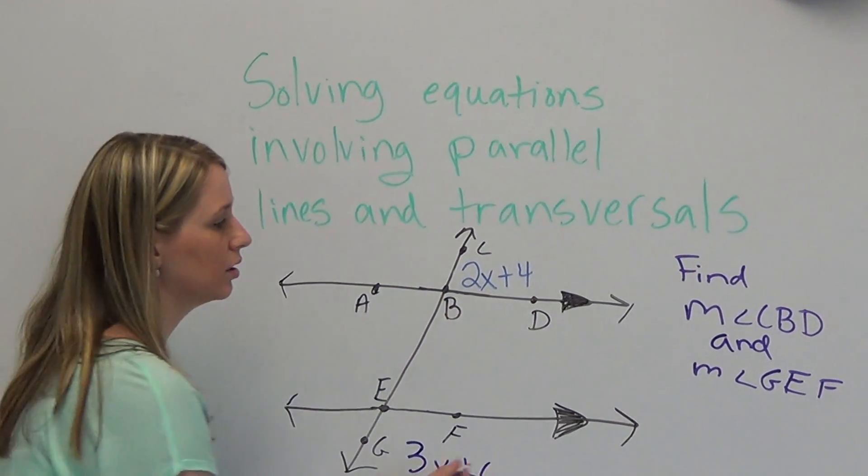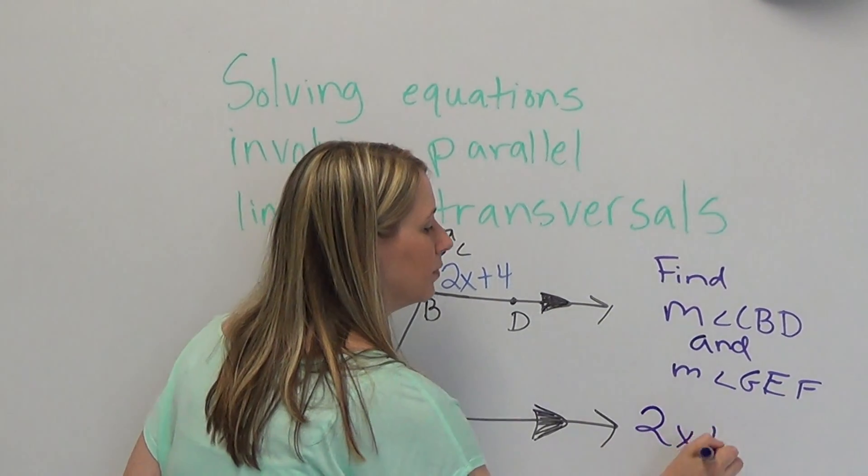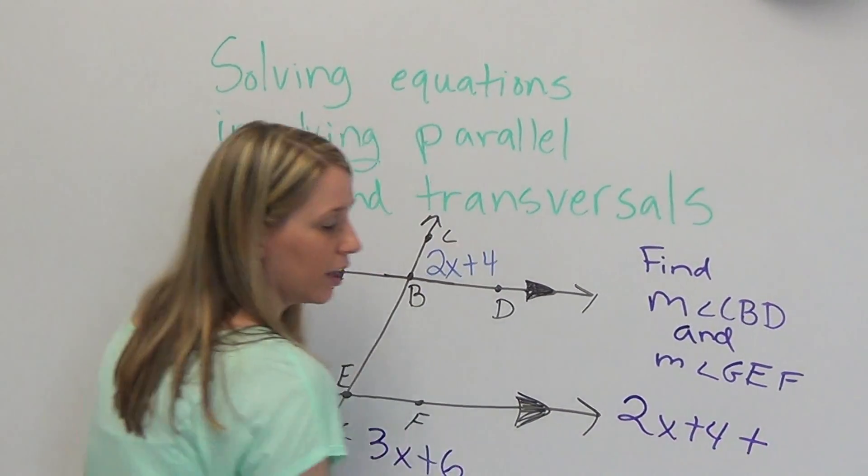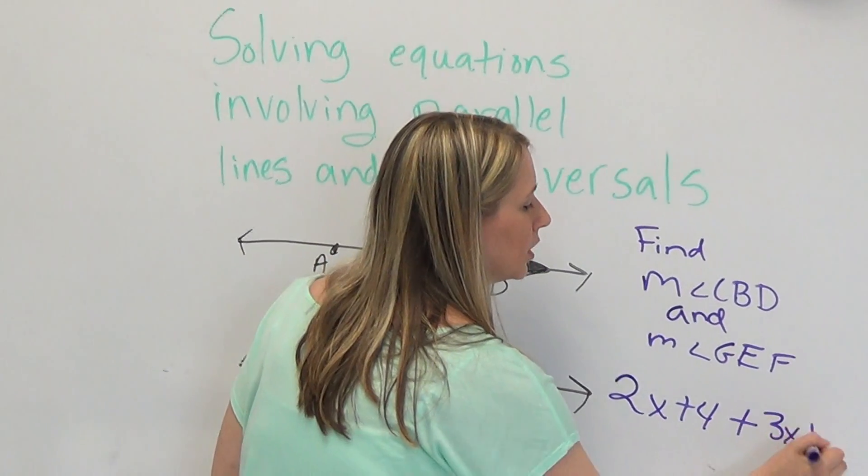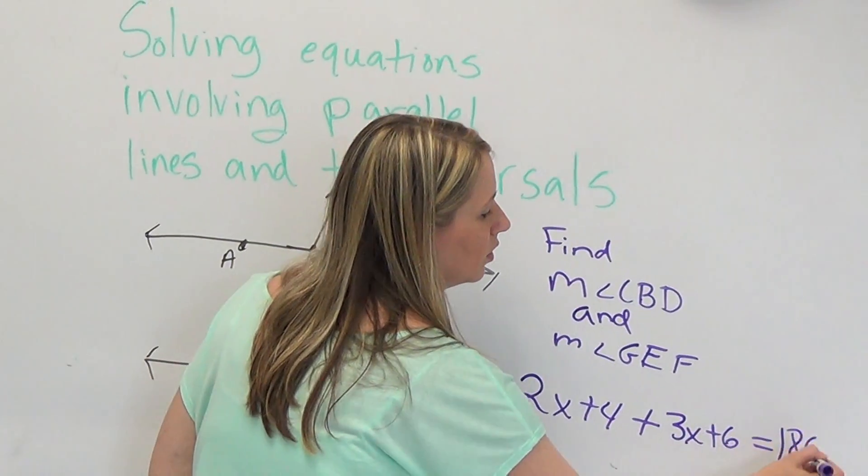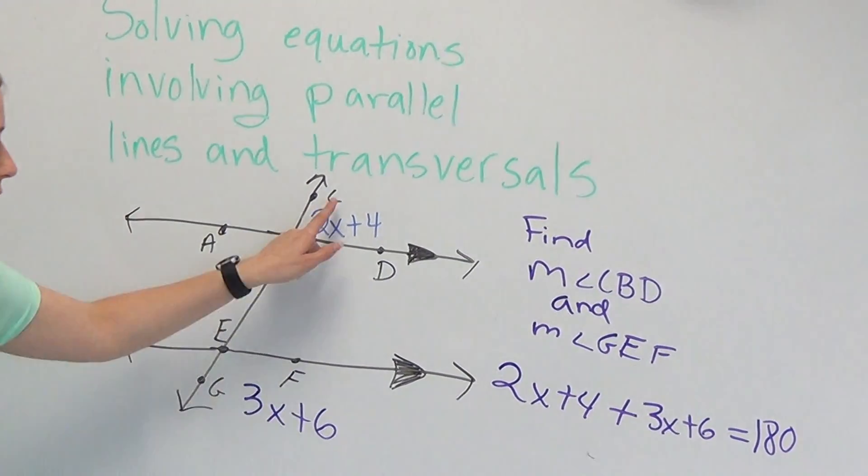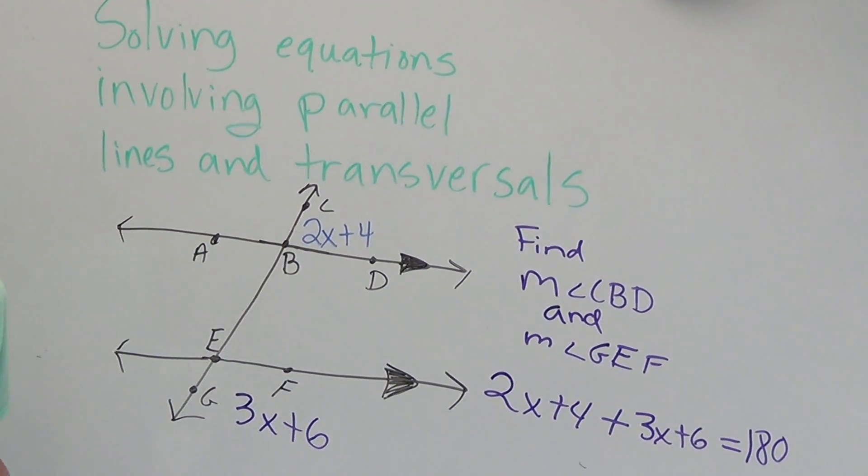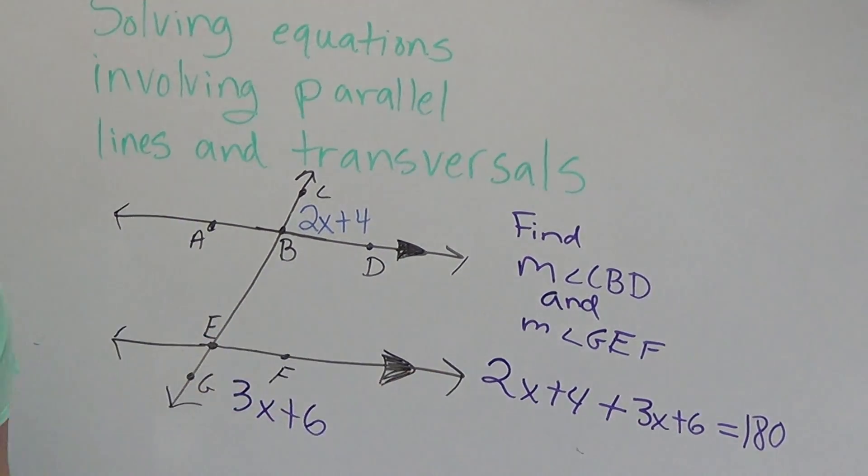So we take our expressions, 2x plus 4, add them together, plus 3x plus 6 has to equal 180 degrees. So this plus this equals 180. Now we've got an equation we can solve.